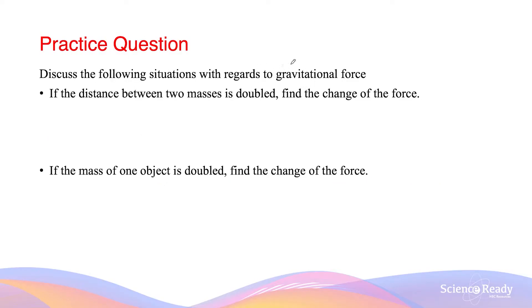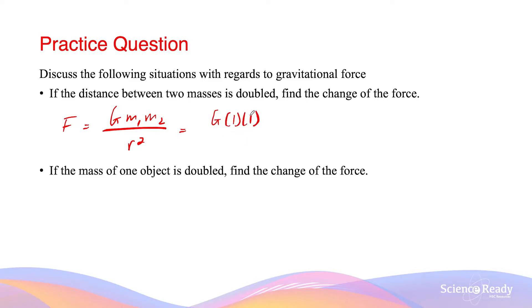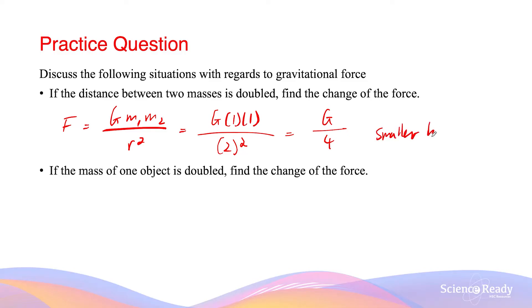Discuss the following situation: if the distance between two masses is doubled, find the change in force. We know the gravitational force equals G times M1 times M2 divided by R squared. If the distance is doubled, we substitute 1 for the unchanged masses and divide by 2 squared, giving an expression of G over 4. Since G is the universal gravitational constant, the gravitational force has become smaller by a factor of 4.